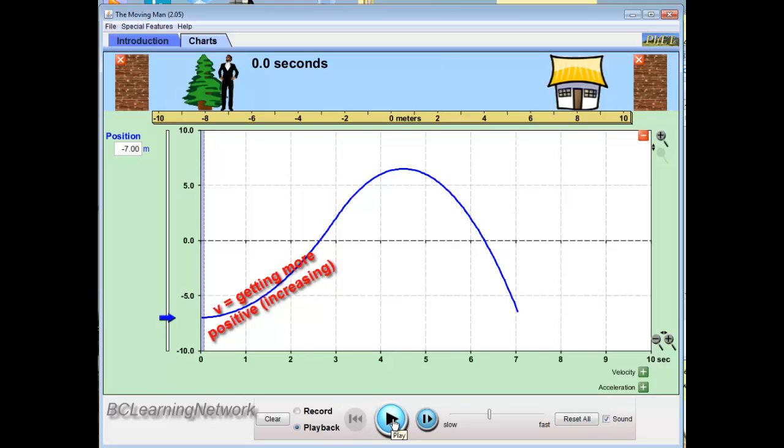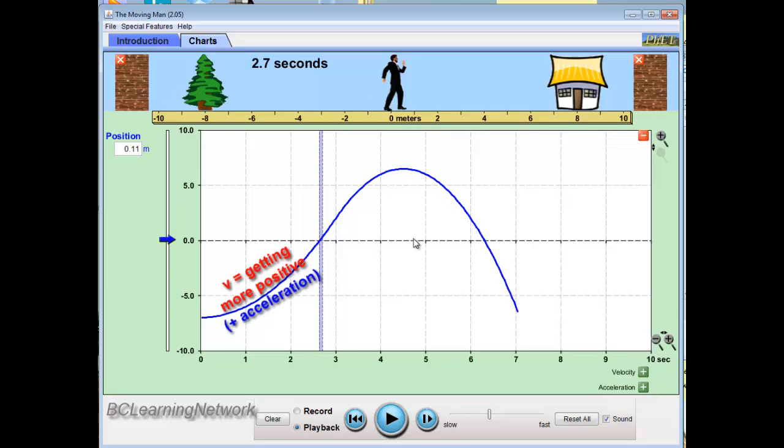Now, let's run it and see how that looks. Okay, so for roughly 2.7 seconds here, you can see that he was picking up speed. So he's now at the zero meter mark. He started at the minus seven and gradually accelerated. His velocity was getting more and more positive.